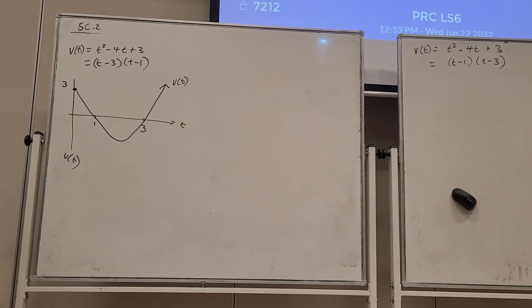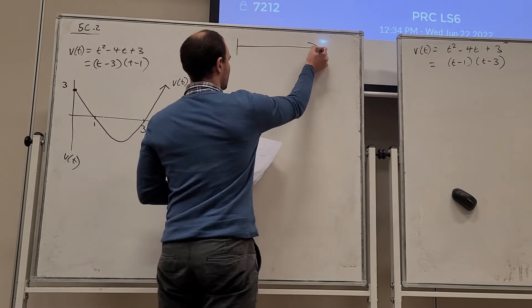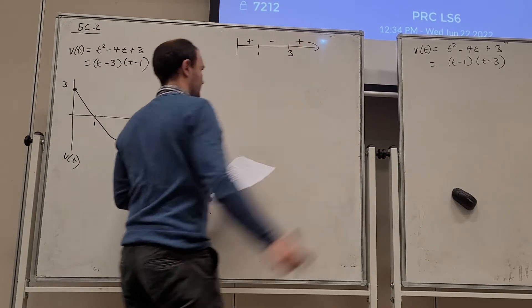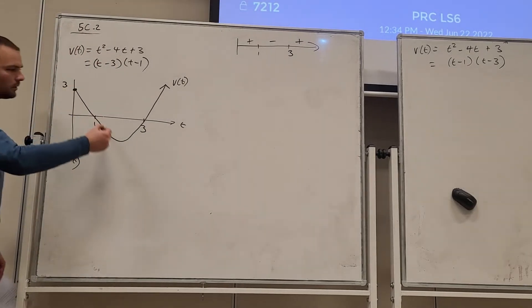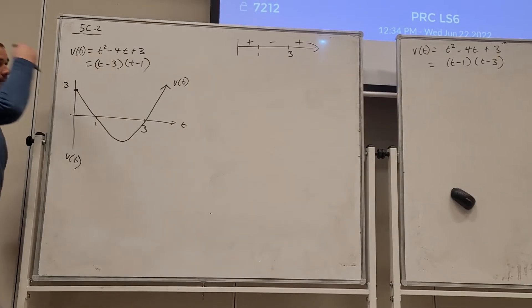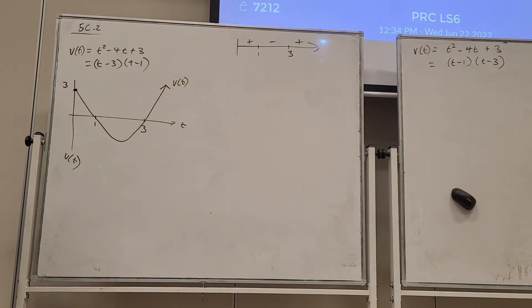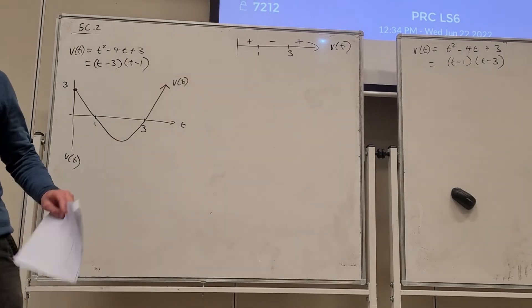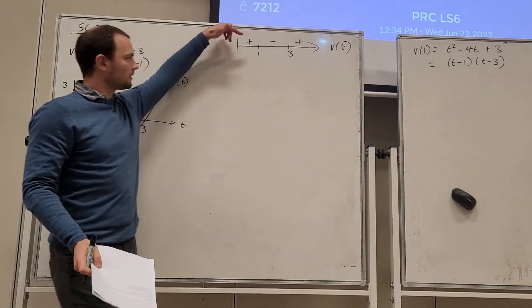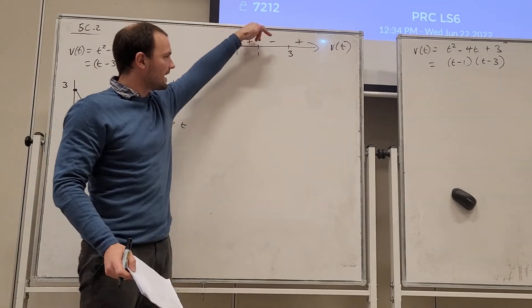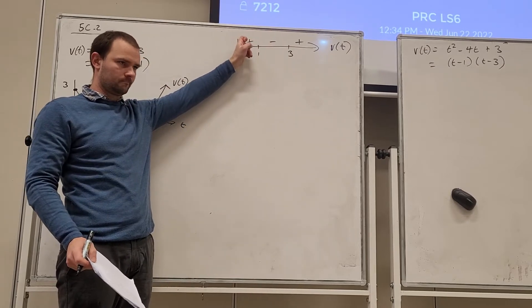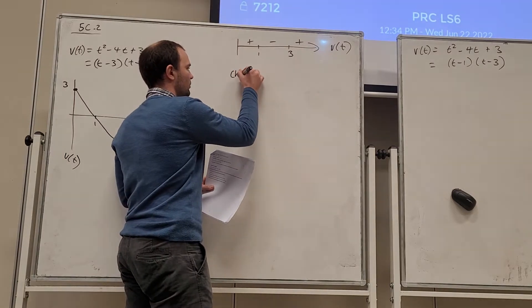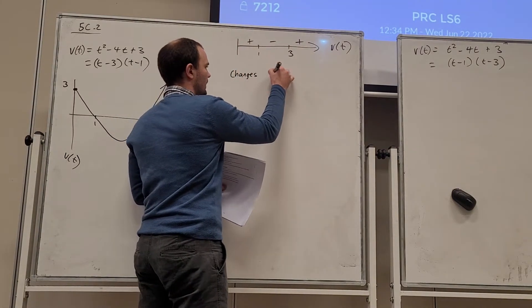So if we want to draw its sine diagram, what's the sine diagram going to look like? We've got 1, we've got 3, and we're positive and negative and positive. How do I know that it's opening upwards? Because it has a positive value. So that's the sine diagram. And then what we should recall from calculus, if we have positive velocity and then negative velocity, it has changed direction. It's changed direction at time is 1 and time is 3.